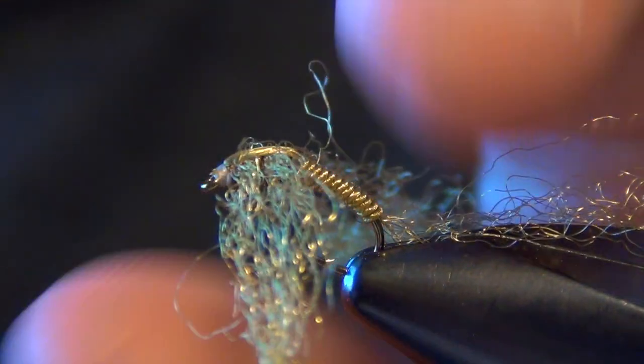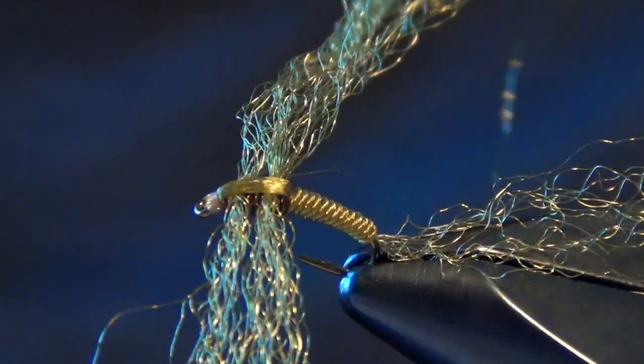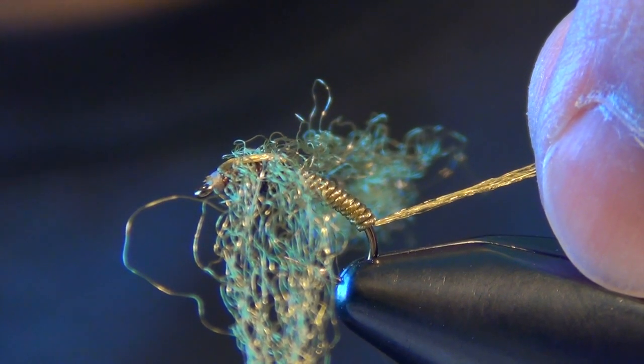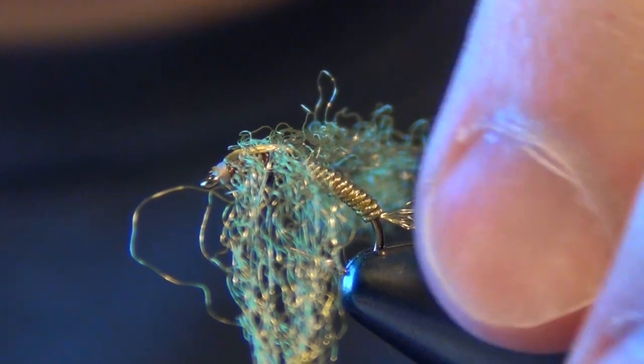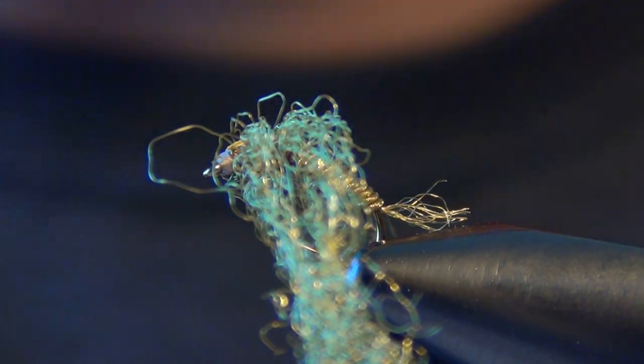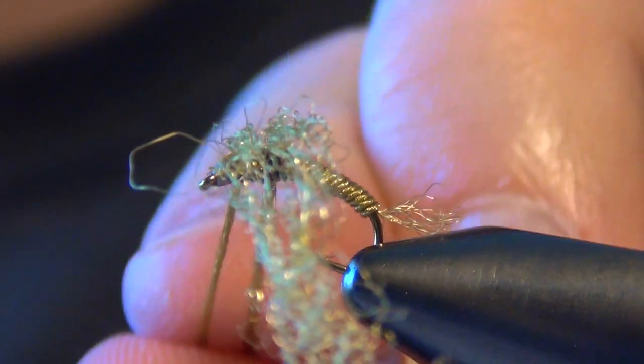Now we can trim our legs and tail. First we'll trim our tail. On this fly, on the other Trons for the mayflies, we tied in the tail a little bit longer and trimmed it about the length of the body. This fly, just the opposite. Trim it about half the length of the body. Stones have very stubby little tails.